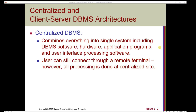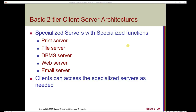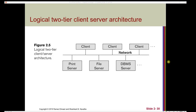In a centralized database, everything is combined into a single system — the DBMS software, hardware, application programs, and user interface processing software. Users can still connect through a remote terminal, but all processing is done at a centralized site. The basic two-tier client-server architecture has different servers with specialized functions — for example, a printing server, file server, web server, email server, and a DBMS server. Clients can access the specialized servers as needed. Clients use the network to connect to each specialized server directly through a client software module.